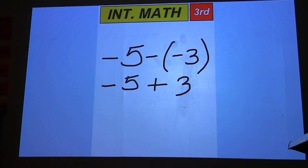And then, if it's an addition problem, you can write down 5 negatives for the negative 5 and 3 positives for the positive 3.